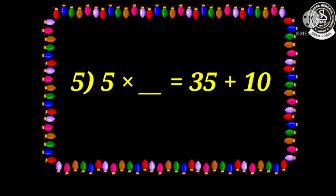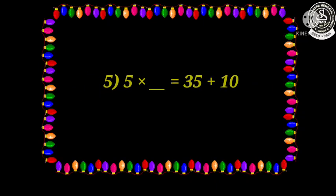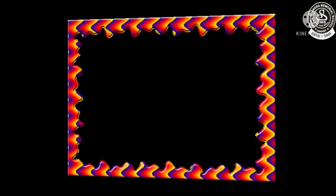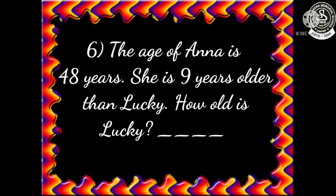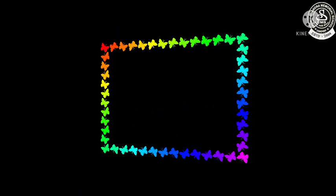Now let us see question number six: the age of Anna is 48 years. She is nine years older than Lucky. How old is Lucky? You have to find out.